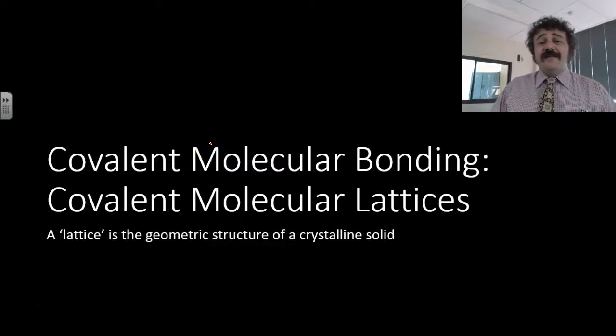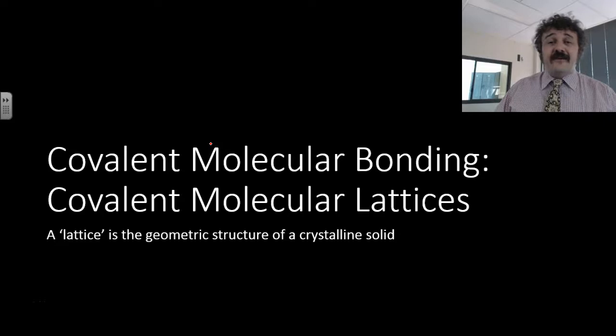Alright, so let's have a look at covalent molecular lattices. We're actually looking at covalent molecules, but we're cooling them down to the point where they're a solid, so they make a lattice structure. This makes them really easy to compare against other types of bonding which we can cool down to a solid.